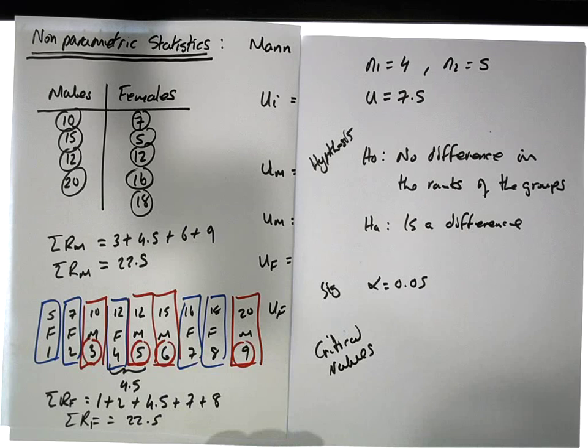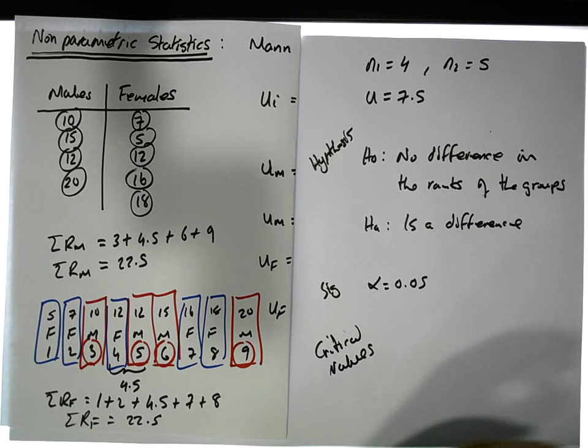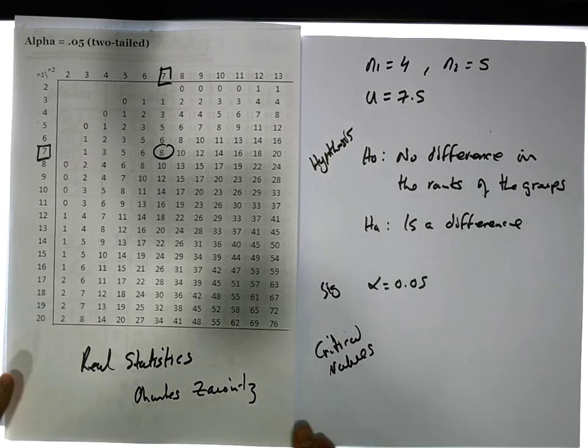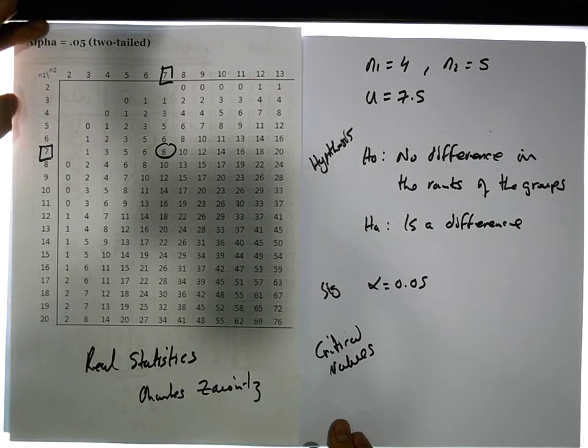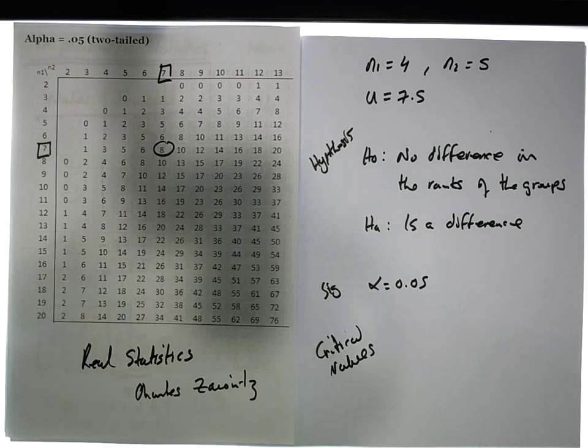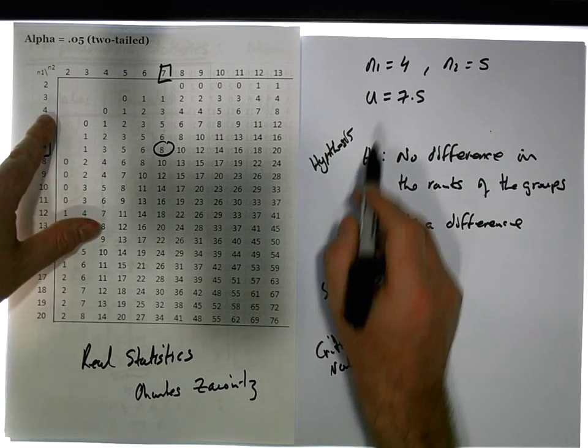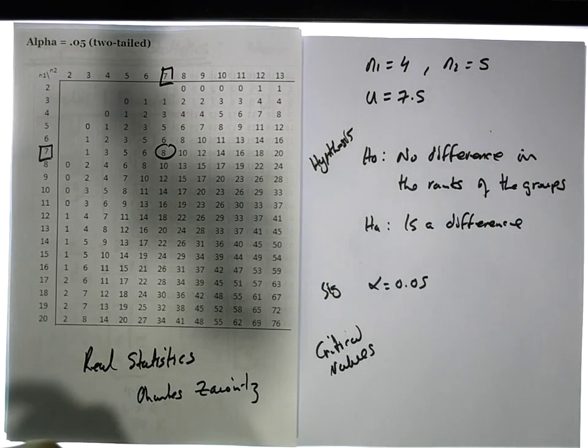The critical values—well, to get the critical value for the distribution, we need to look up a table, and I have a table here that I've taken from Real Statistics in Excel. It's a great page to go to. I need to look up the critical value.